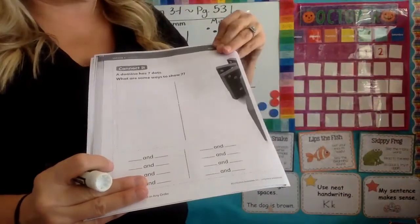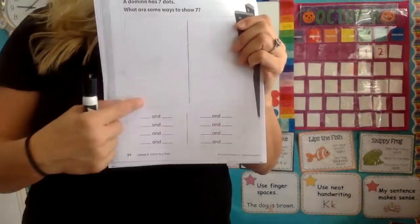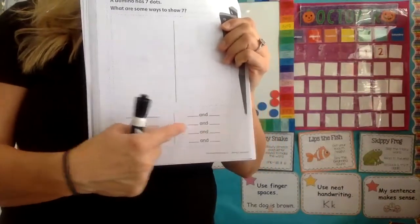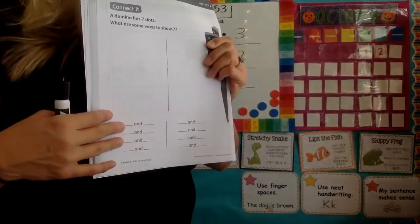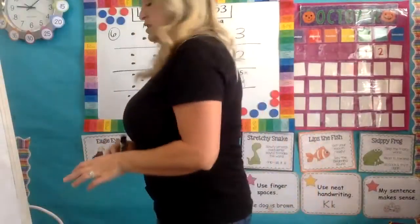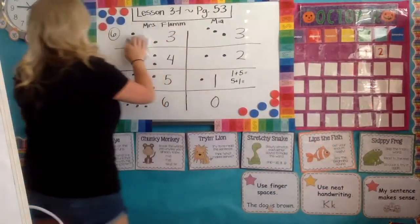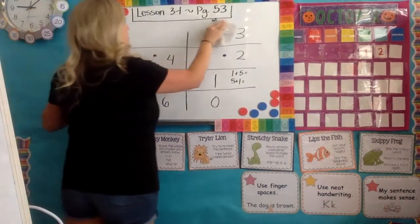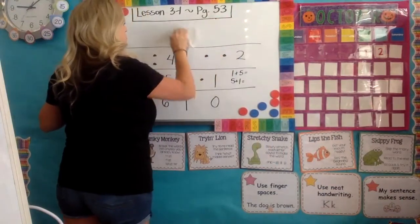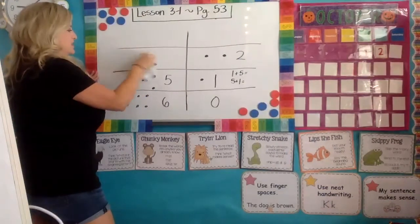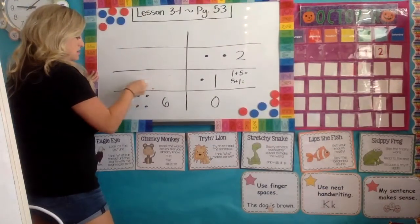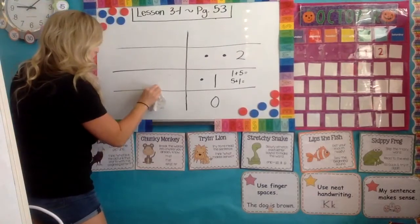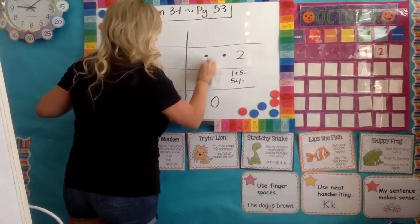Now I'm flipping the page. At the top it says 'connect it' — this is where we go a little bit deeper. It says: a domino has seven dots, what are some ways to show seven? You can do your dots and then write the numbers. There are two columns. If you want, pause and do it on your own. I'm now on page 54, and I'm going to keep my columns and rows as we do the same kind of thing.